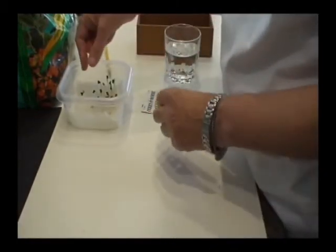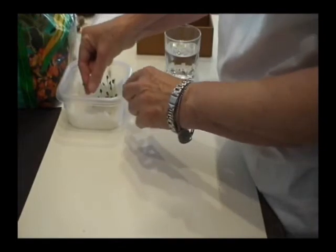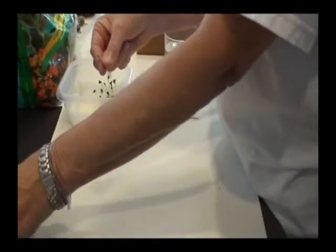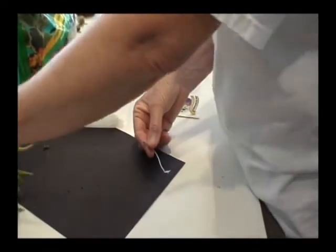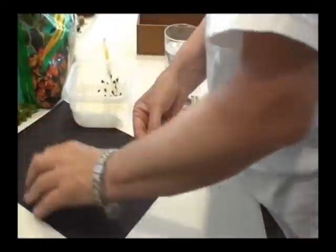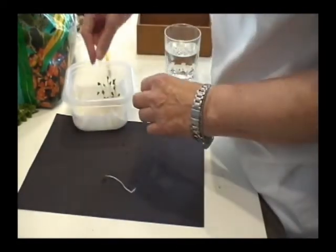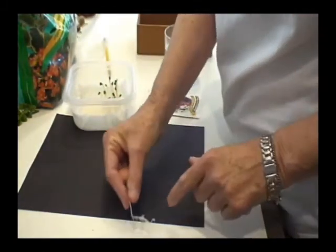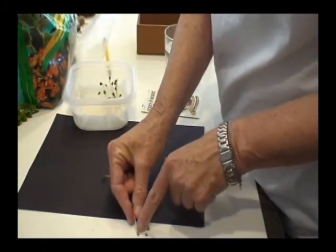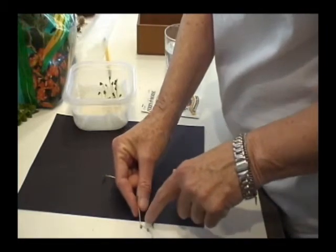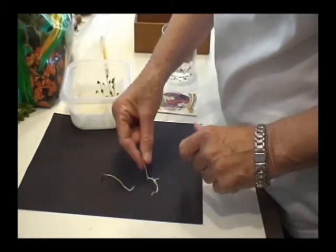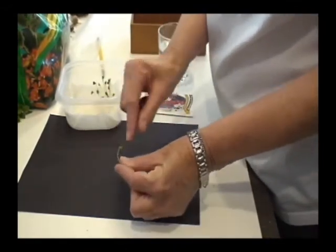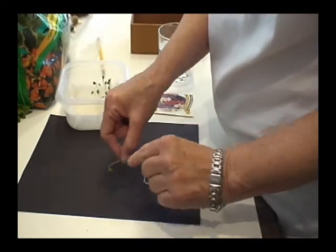So what does a plant do when it germinates? Well, first of all, it takes up water and the seed swells. And then the first thing that comes out, I've started a few here. There's the little seed and it has grown this root and from the root then it goes ahead. After sending out the root, it goes ahead and sends up these first leaves.